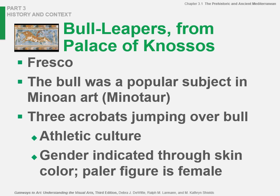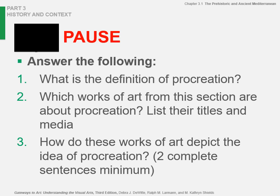It is time to take a break and answer some questions based on this lecture. Get out a piece of paper or a Word document and start typing the answers. You don't have to title this document anything — just please number the responses. You also don't have to retype the question. Just type the answers. First question, number one: what is the definition of procreation? Number two: which works of art from this section are about procreation? List their titles and media. If you don't know, I didn't really go over any works of art and the idea of procreation in the lecture PowerPoint, so this means you're going to have to go back to your textbook in chapter 1.3.